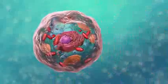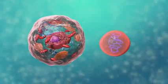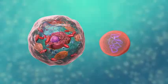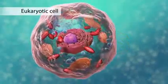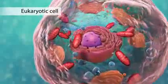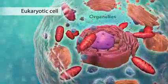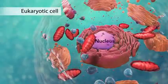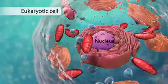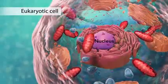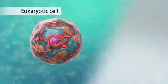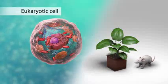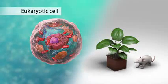There are two broad categories of cells. The first category is eukaryotic cells. They have organelles, which include the nucleus and other special parts. Eukaryotic cells are more advanced, complex cells such as those found in plants and animals.